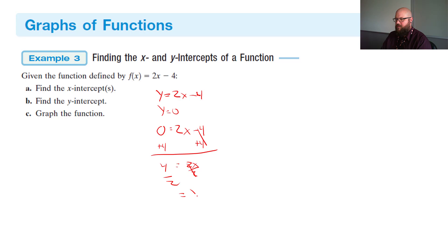We're left with x. And then what's 4 divided by 2? 2. So our x intercept is at x = 2.